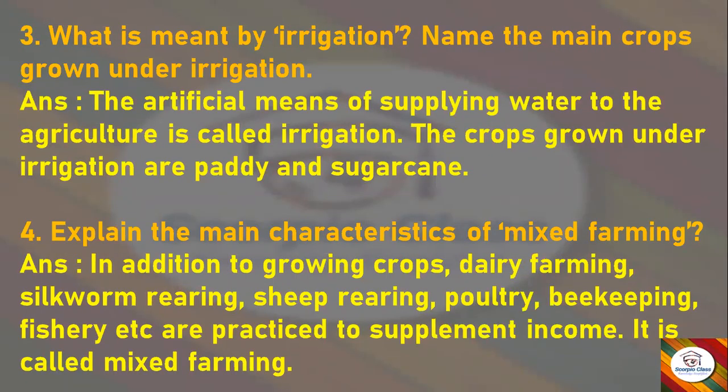Third question: What is meant by irrigation? Name the main crops grown under irrigation. Answer: The artificial means of supplying water to agriculture is called irrigation. The crops grown under irrigation are paddy and sugarcane.